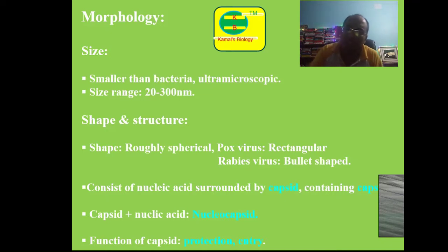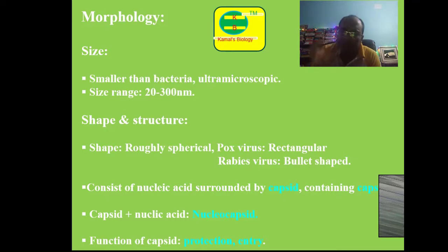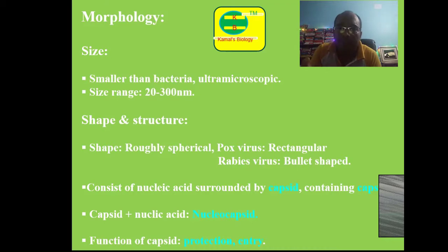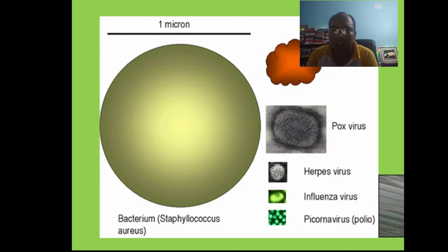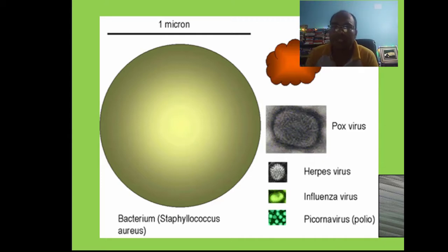The nucleic acid of the virus is covered by a protein coat called the capsid. Capsid and nucleic acid together are collectively known as the nucleocapsid. The capsid helps the virus enter living cells and protects the genetic material of the virus. You can compare the structure of a virus with other microorganisms such as chlamydia.